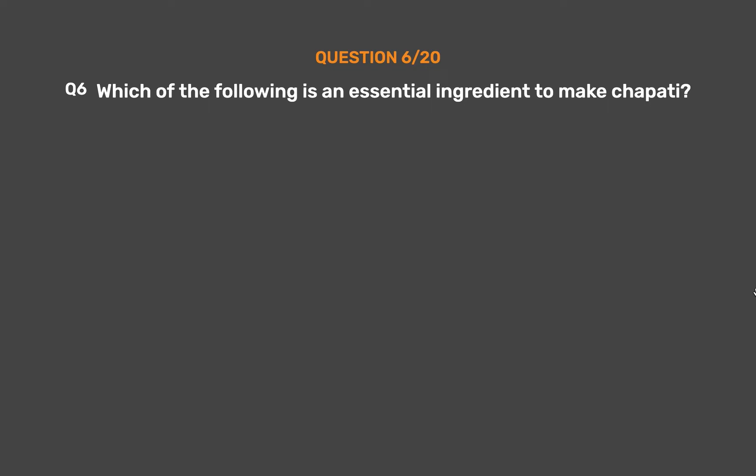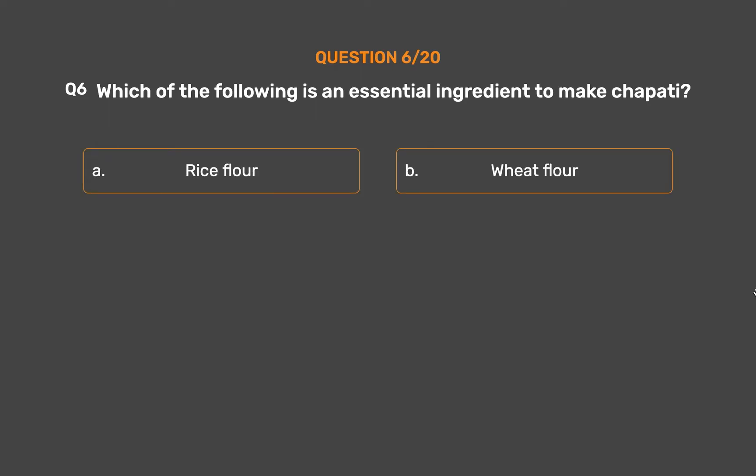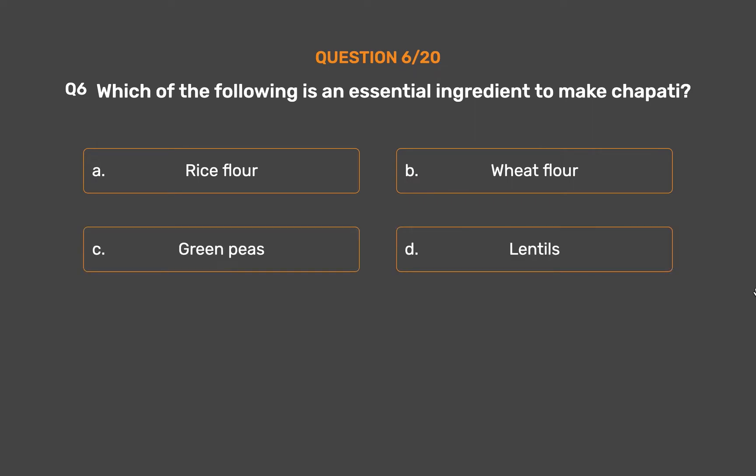Question number 6. Which of the following is an essential ingredient to make chapati? Option A, Rice flour. Option B, Wheat flour. Option C, Green peas. Option D, Lentils.